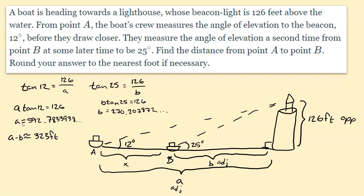Solving those equations: a = 126 ÷ tan(12) ≈ 592.83, and b = 126 ÷ tan(25) ≈ 270.08. Subtracting gives x ≈ 323 feet, rounded to the nearest foot.